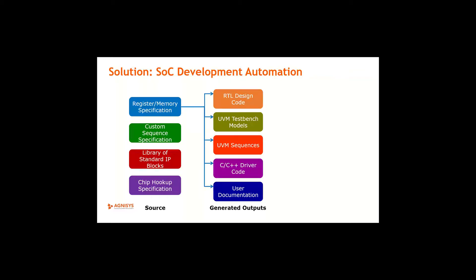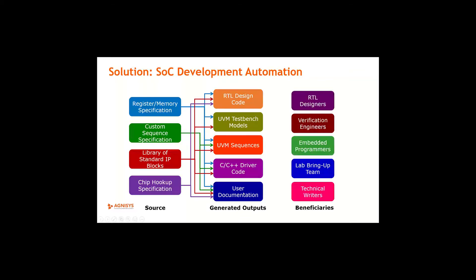Like, registered memory people have been doing this for a decade now. And you could create RTL, UVM test bench, UVM sequences, C, C++ driver and documentation. But custom sequences also, you could capture them in a standard format and generate UVM sequences, C and C++ driver code and documentation. And then, library of IPs is when you collect these registered memory specification along with the IP and add to that the custom sequence specification. That becomes a library and that affects everything. That, basically, you can use to generate all these outputs. And then the chip hookup specification from which you could generate RTL and the documentation.